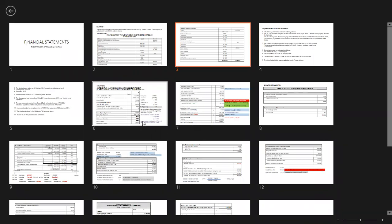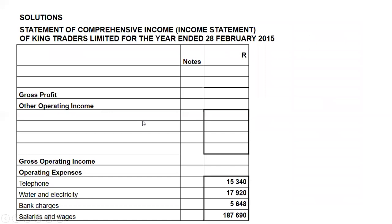Everything in the nominal accounts section will be recorded in the statement of comprehensive income. Sales value is $2,540,806, and cost of sales is $1,821,610. After checking the adjustments and confirming no transaction impacts sales or cost of sales, net sales come to $2,536,900. Minus $1,821,610 gives a gross profit of $715,290.